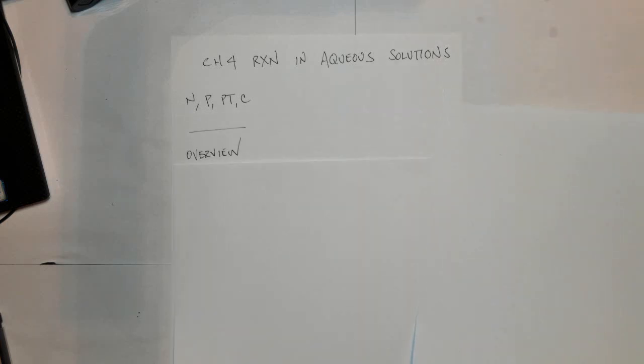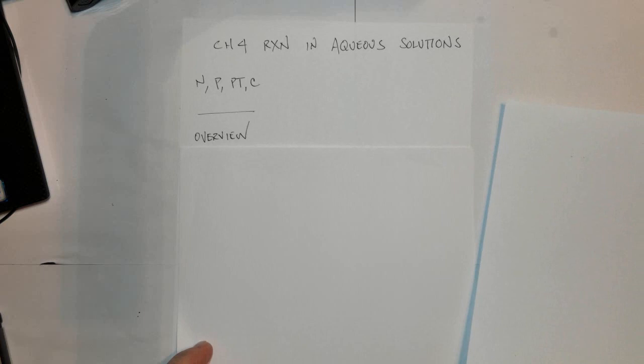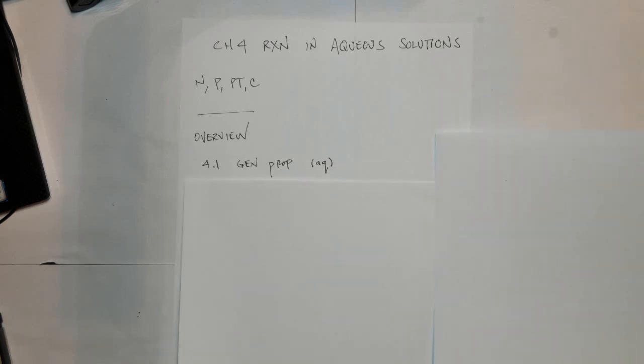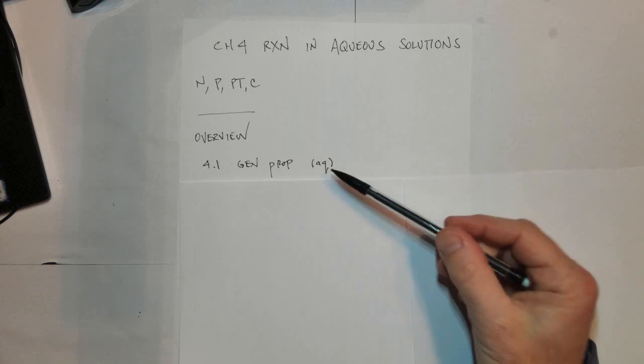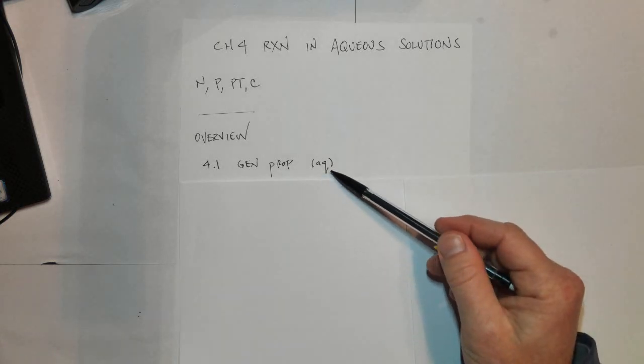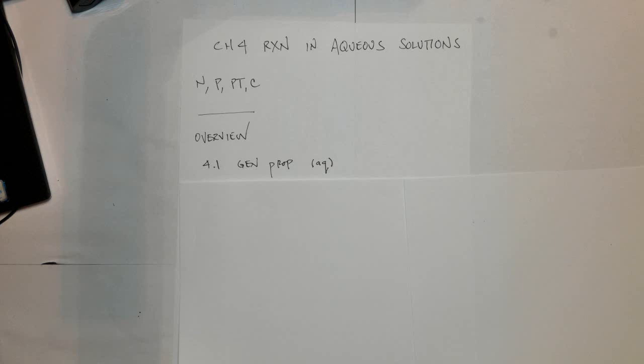So just an overview of what we're going to learn in Chapter 4. First of all, Chapter 4 is probably the toughest one in all of the first semester and it includes six challenging topic areas. The first one is just general properties of aqueous solutions. They put a little AQ down below something that is aqueous, therefore meaning it's dissolved in water.